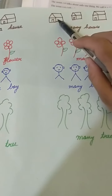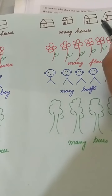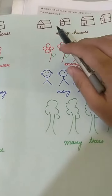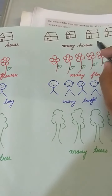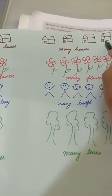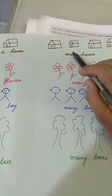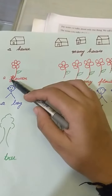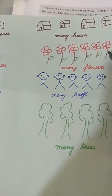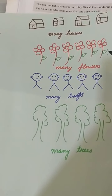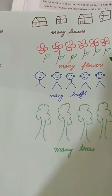Now again look at another example: a house — ek hi ghar dikh raha hai. Now: one house, two house, three house, four house — we have written 'many houses' or 'four houses' — H-O-U-S-E-S — S add kar diya. A flower — a flower, one flower, two, three, four, five, six flowers. You can write 'six flowers' or 'many flowers' — it means more than one.